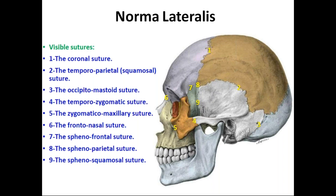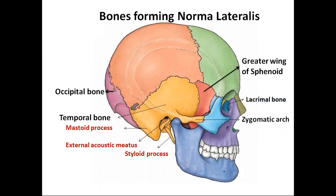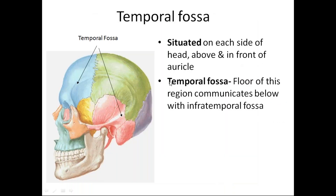Norma lateralis is studied in different regions. The main bones contributing to the Norma lateralis include the squamous part of the parietal bone, the temporal bone, the greater wing of sphenoid, the zygomatic arch, and the temporal bone which has the mastoid process, external acoustic meatus, and styloid process. We are going to study Norma lateralis in different regions. The first region we are going to study is the temporal fossa.